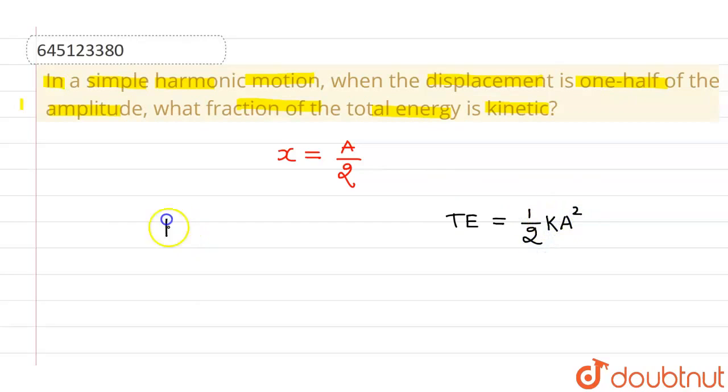And kinetic energy is given by (1/2)k(a² - x²). Now, at displacement x = a/2,